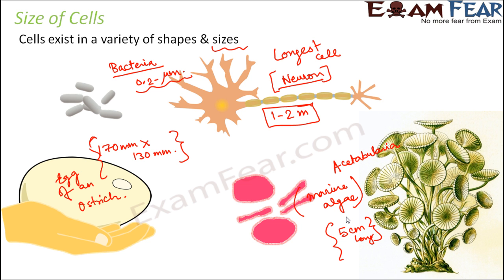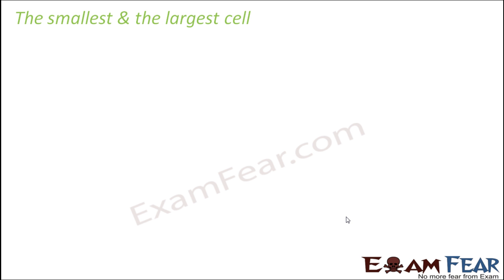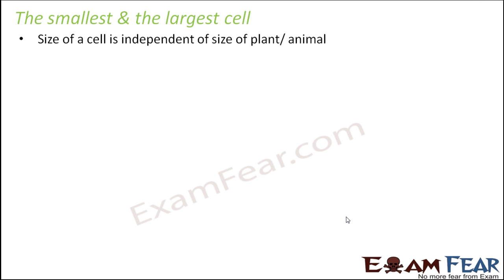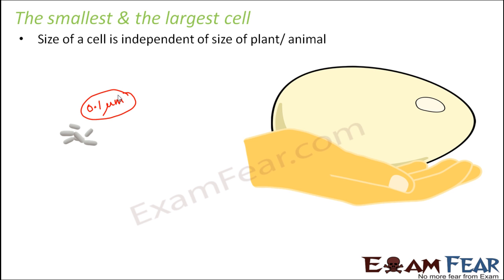We have other cells of different sizes, like red blood cells. Let us quickly look at the smallest and the largest cell. The size of a cell is independent of the size of the plant or animal. The smallest cell is that of bacteria, possibly in the range of 0.1 or 0.2 microns. The largest cell is the egg of an ostrich, with dimensions of 170 mm by 130 mm.